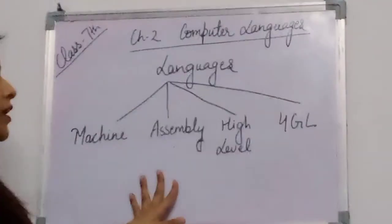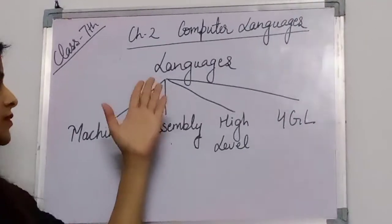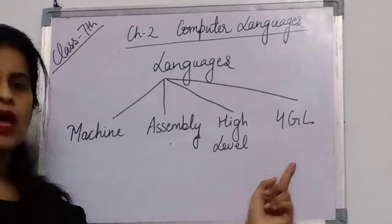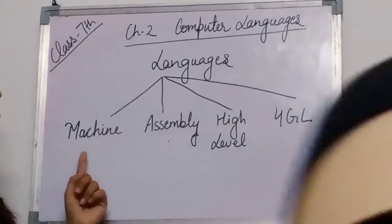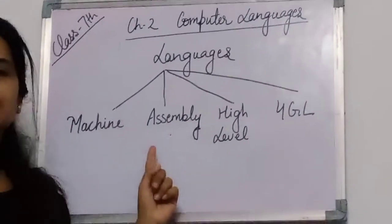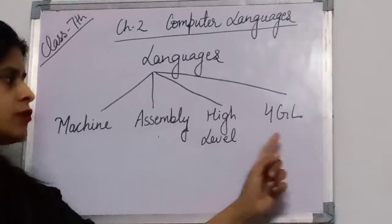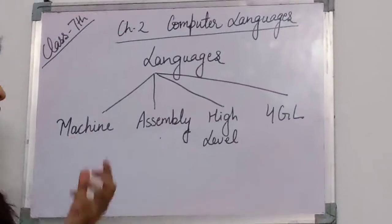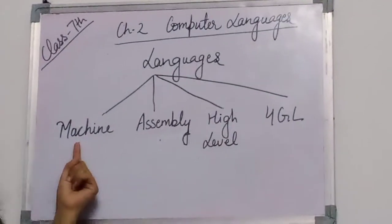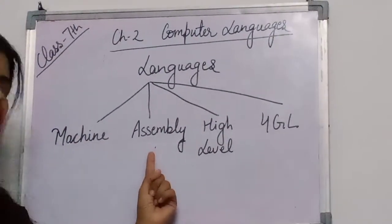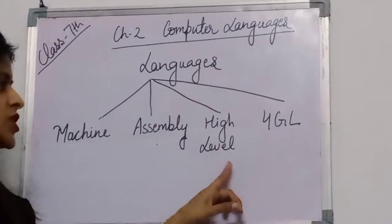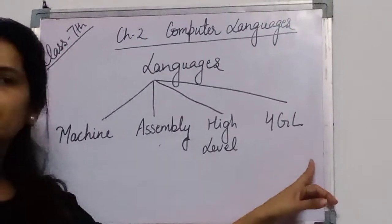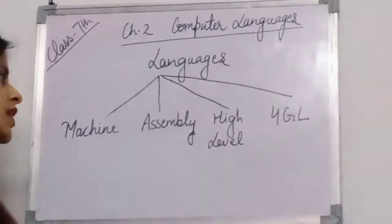We have studied about the languages. There are four types of language: first is machine, second is assembly, third is high level, and fourth is fourth generation language. This was first generation language, it was second generation language, it was third generation language, and it was fourth generation language.